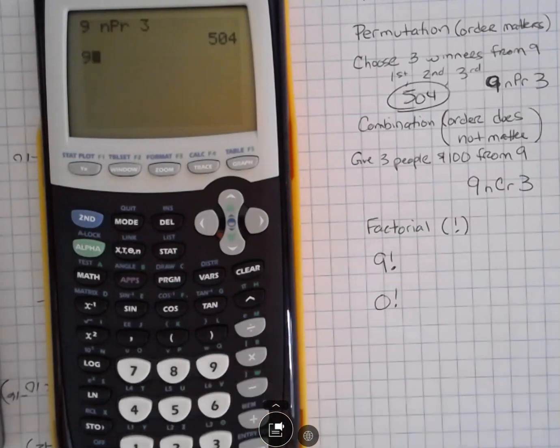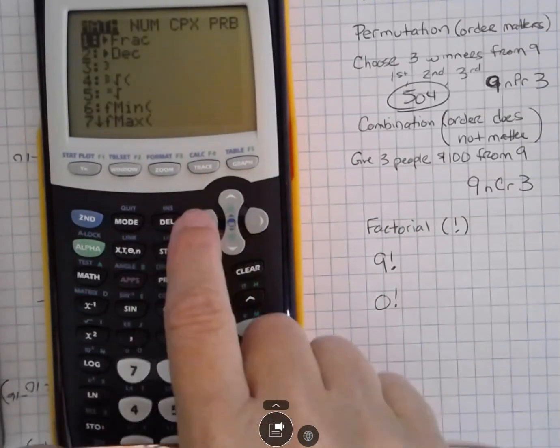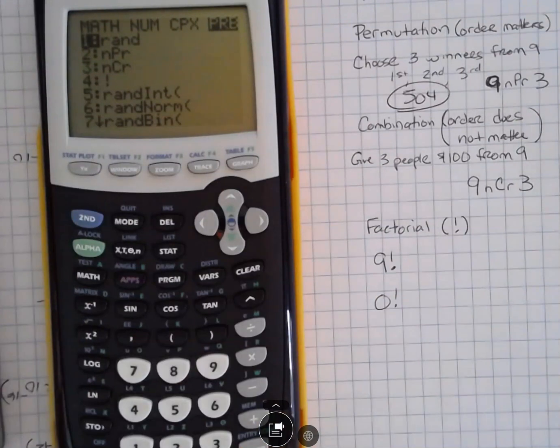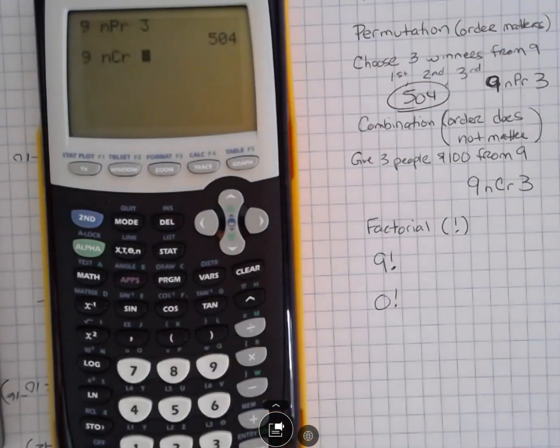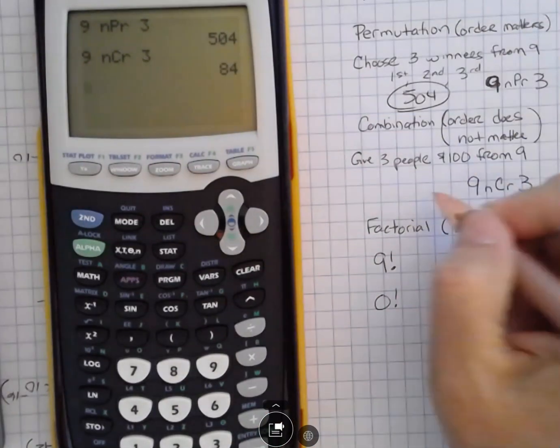To do that, we're going to do a nine again, going to hit math again, go to probability. You can just hit three because that's what it is on the list, or you can go down there and hit enter. And then we're going to choose three and we're going to see that there's 84 ways.